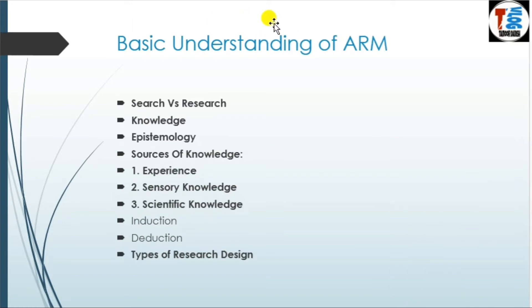The basic understanding of advanced research method includes: search versus research, knowledge, epistemology, sources of knowledge — that is experience, sensory knowledge, scientific knowledge — and lastly, types of research design.